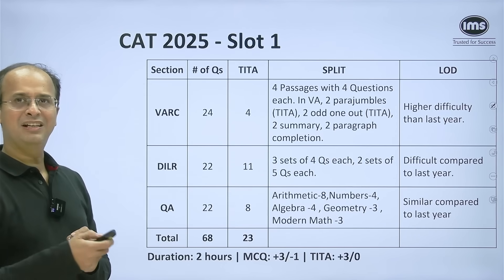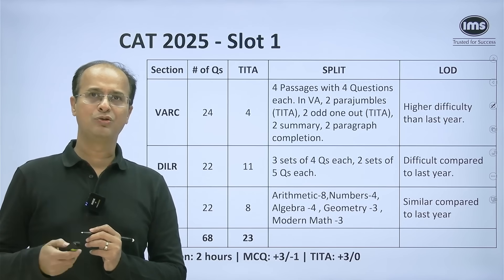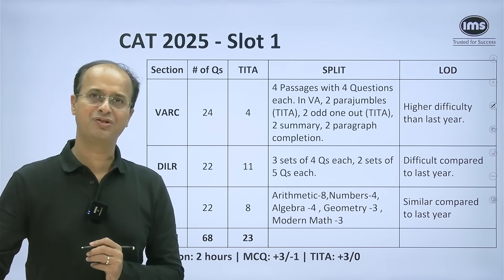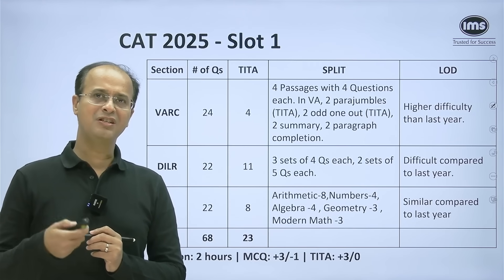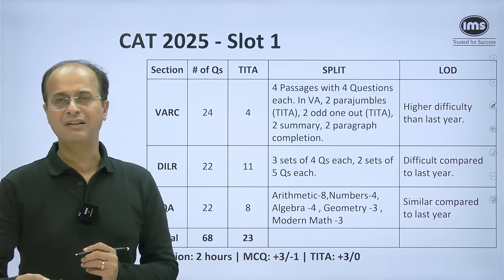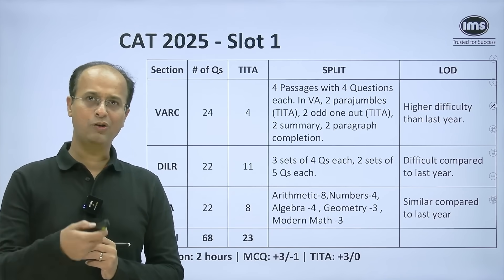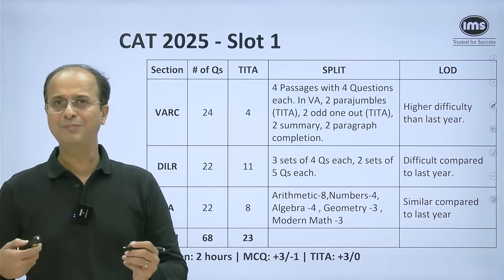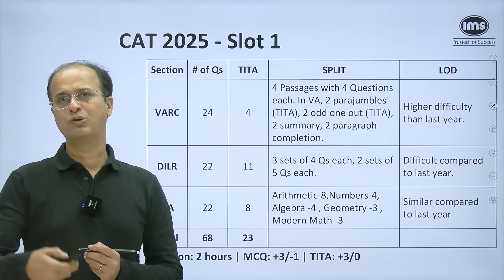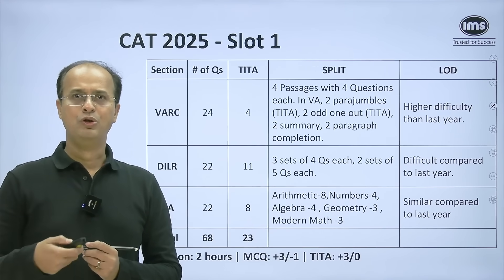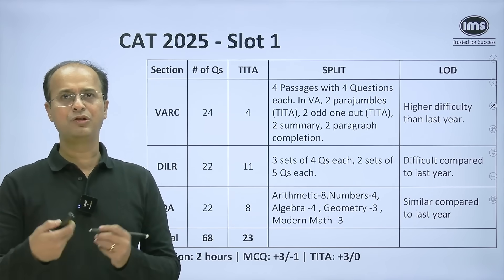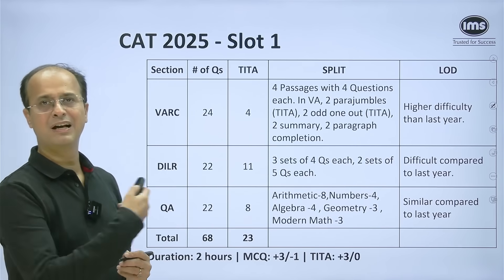For the VARC section, two changes. One, para jumbles was back — we had two para jumble questions. Second change, this time the RCs were a little more difficult to read. One of the passages, especially on complex systems, was actually complex and had very long options. So para jumbles and slightly more difficult RCs were the two key changes in VARC.